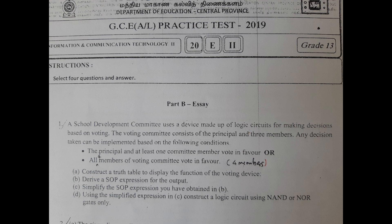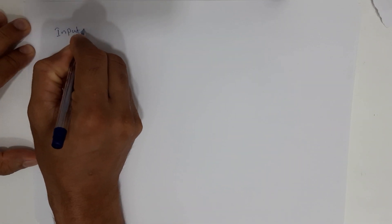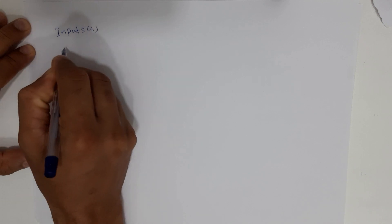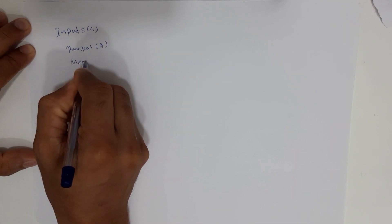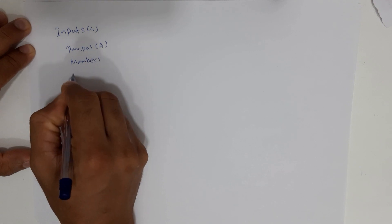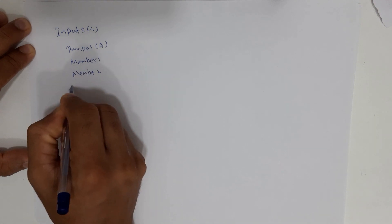Good morning everyone. We'll discuss this question: a school development committee uses a device made up of logic circuits for making decisions. The voting committee consists of a principal and three members. We can understand that there are four inputs. If we label the inputs, the first input is the principal, which we'll label as A, and the three other members we'll label as Member 1, Member 2, and Member 3.